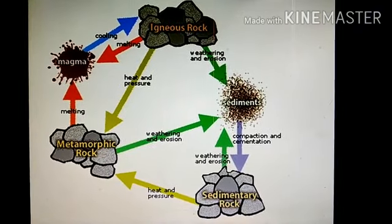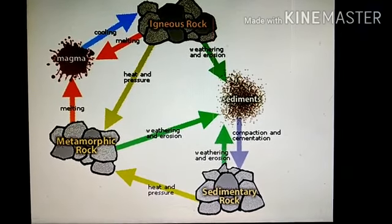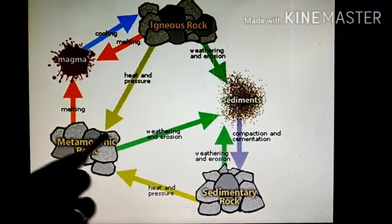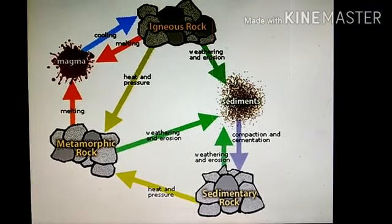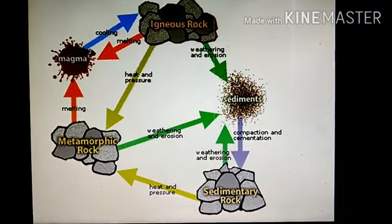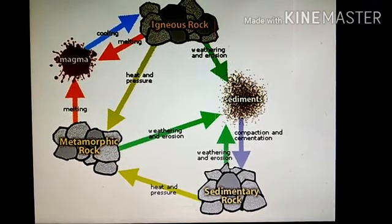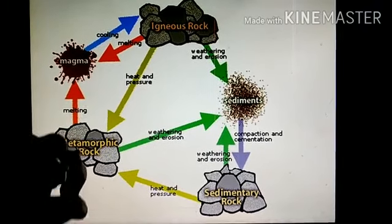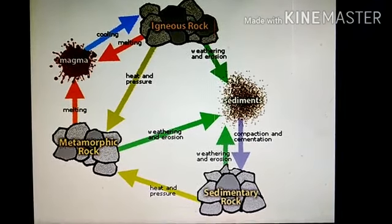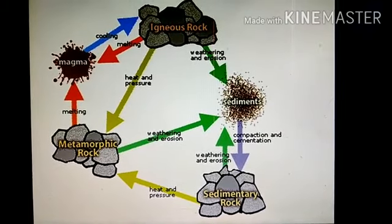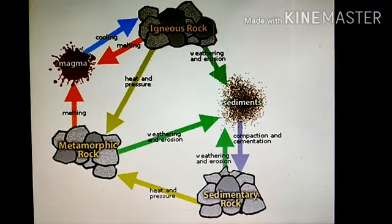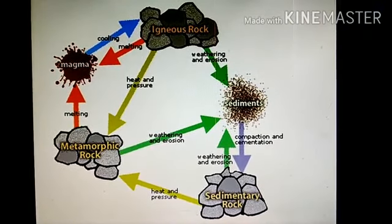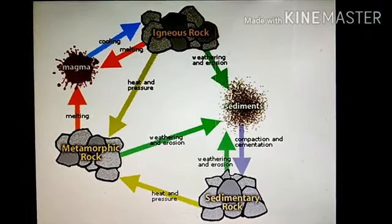When the igneous and sedimentary rocks are subjected to heat and pressure, they change into metamorphic rocks. The metamorphic rocks, which are still under great heat and pressure, then melt down and again transform into molten magma. This molten magma again can cool down and solidify into igneous rocks. This process we call rock cycle.